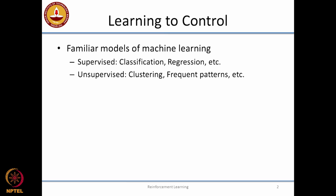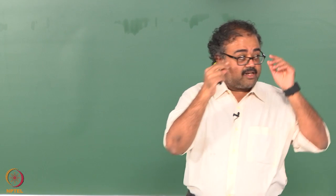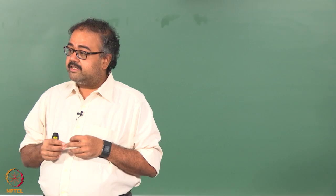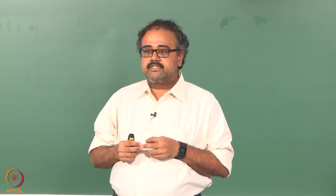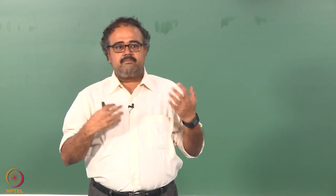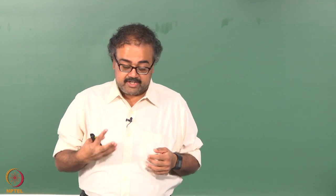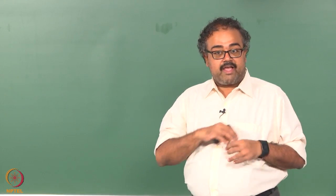In machine learning, we looked at familiar modes of learning where the idea was to learn from data — given a lot of training instances, essentially trying to learn from those instances what to do. One model was supervised learning, where we looked at classification and regression. The goal was to learn a mapping from an input space to an output — categorical in the case of classification, continuous in the case of regression.